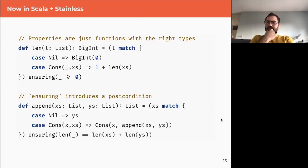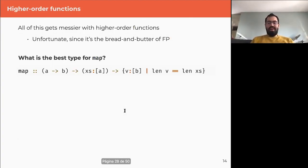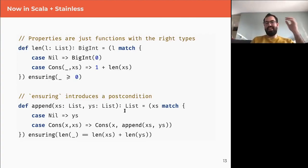Depending on the language, these refinement types are first class or not. In Liquid Haskell, you can have them, but Haskell itself still sees an integer. Someone also asked whether Liquid Haskell allows declaring types enriched with constraints, not just pre/postconditions. In Liquid Haskell, they are actual types with properties — real refinement types. In Stainless too, as far as I know. The way we write them looks like pre/postconditions, but the type of non-zero integers is a type itself.